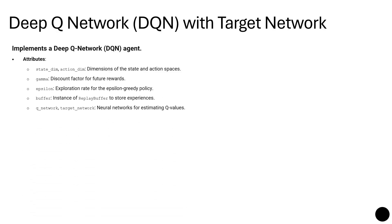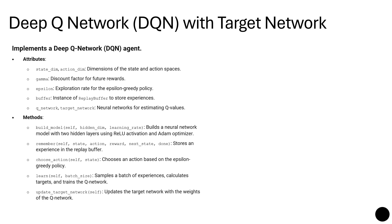So for the implementation, we can see here some attributes that are important in the design of the agent. We have the state dimension and the action dimension. We have gamma, the discount factor for future rewards, and epsilon, the exploration rate for epsilon-greedy policy. We have the buffer, as I mentioned, replay buffer to store the experience. We have the Q network and the target network. Also, we need some methods: the build model, choose actions, the learn function, and the update target network function.